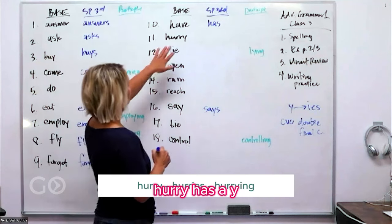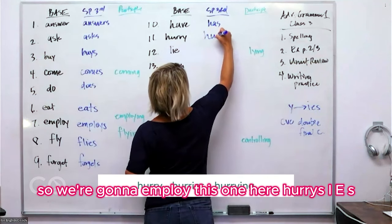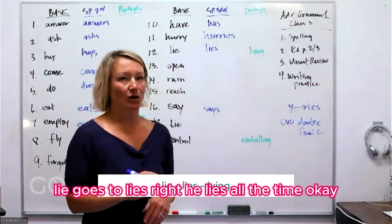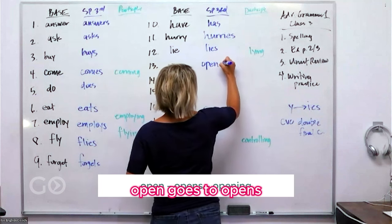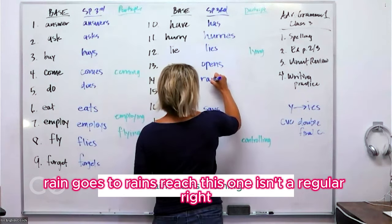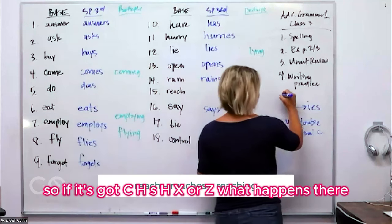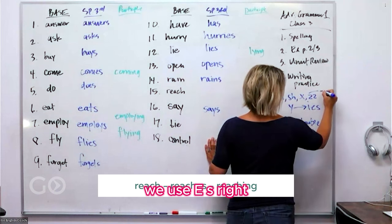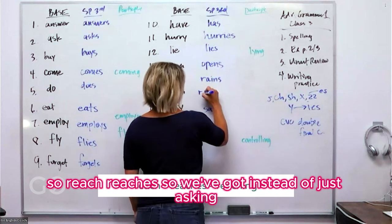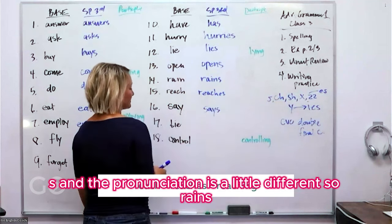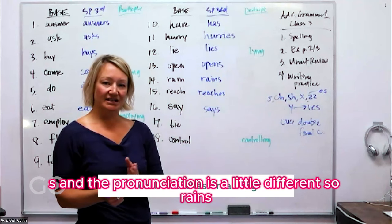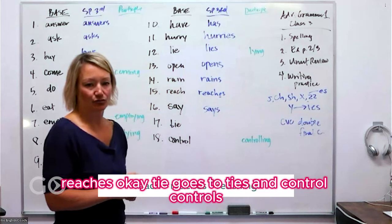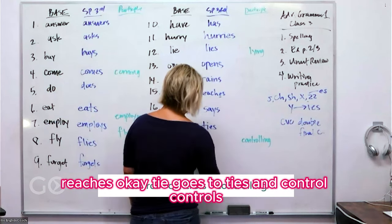'Hurry' has a Y, so we employ the same rule: 'hurries,' with I-E-S. 'Lie' goes to 'lies' — 'he lies all the time.' 'Open' goes to 'opens.' 'Rain' goes to 'rains.' 'Reach' — this one isn't irregular, but if a verb ends in C-H, S-H, X, or Z, we use E-S: so it becomes 'reaches.' You can actually hear the extra syllable: 'rains'... 'reaches.' Then 'tie' goes to 'ties,' and 'control' goes to 'controls.'